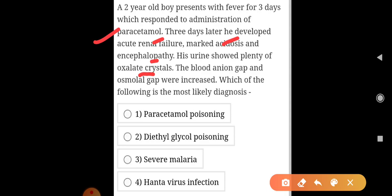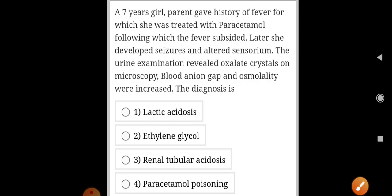So here the diagnosis is diethylene glycol poisoning because oxalate crystals are seen in urine. Now, a 7-year girl, parent gave history of fever for which she was treated with paracetamol.